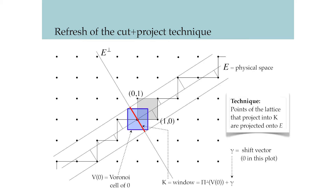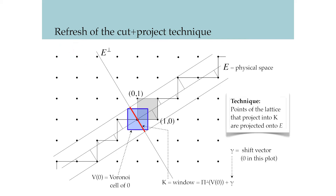As an example, we are trying to project from the two-dimensional square lattice to a one-dimensional quasicrystal. First, we select the physical space, or the quasicrystal space, labeled as E here — it is where the one-dimensional quasicrystal lives. E-perp denotes the perpendicular space. Then we cut out a layer of the square lattice that is parallel to the quasicrystal space and is bounded by the ends of this red segment in the perpendicular space. The red segment — the cut window in the perpendicular space labeled by K — is the bounding window for this cut. It is obtained by projecting the Voronoi cell of a point to the perpendicular space.